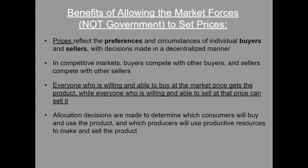Here are the benefits of allowing market forces — not the government — to set prices. Prices reflect the preferences and circumstances of individual buyers and sellers. Decisions are made in a decentralized manner. In competitive markets, buyers compete with other buyers and sellers compete with other sellers. Everyone willing and able to buy or sell at the market price can do so. Allocation decisions determine which consumers get the product and which producers use resources to make and sell it — basically, you let the invisible hand work until buyers and sellers reach market equilibrium.